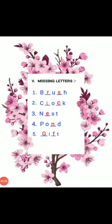Fifth Roman: missing letters. See the picture, students — the red highlighted letters. We will write the missing letters. First one: brush. B-R-U-S-H. Second one: clock. C-L-O-C-K. Third one: nest. N-E-S-T. Fourth one: bond. B-O-N-D. Fifth one: gift. G-I-F-T.